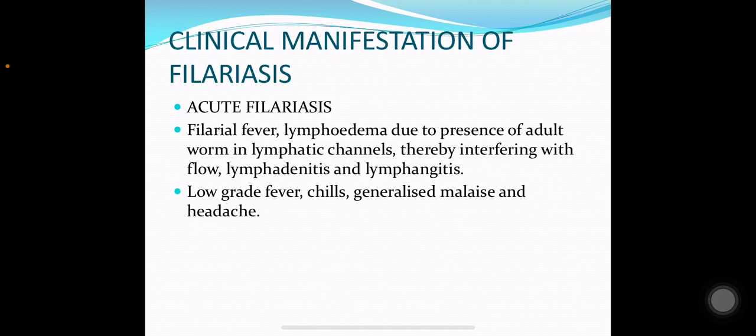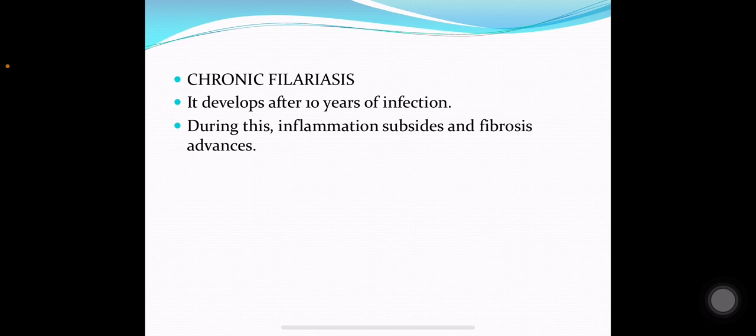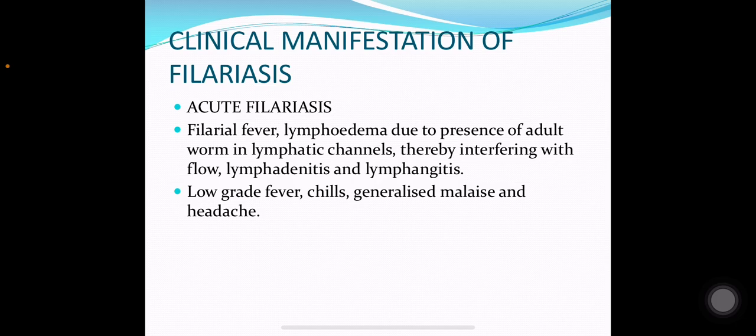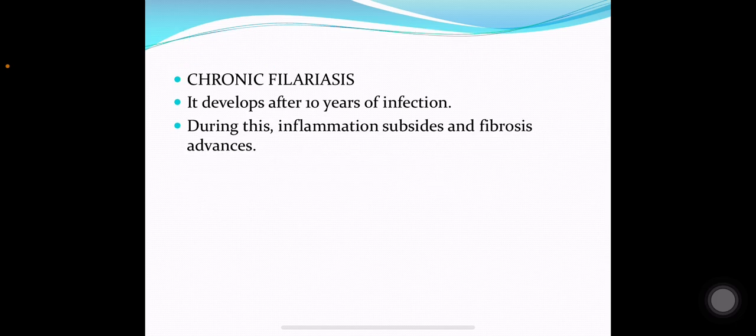Clinical manifestations of filariasis: acute filariasis may include filarial fever, lymphedema due to the presence of adult worms in lymphatic channels, lymphadenitis and lymphangitis, low-grade fever, generalized malaise and headache. Chronic filariasis develops after 10 years of infection, during which inflammation subsides and fibrosis advances. There are thus two clinical varieties: acute filariasis and chronic filariasis.